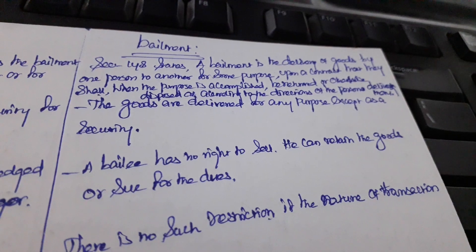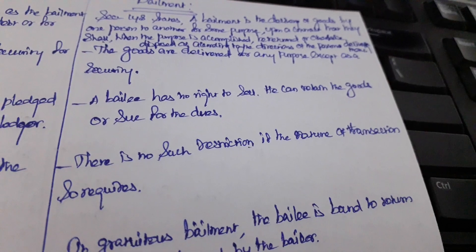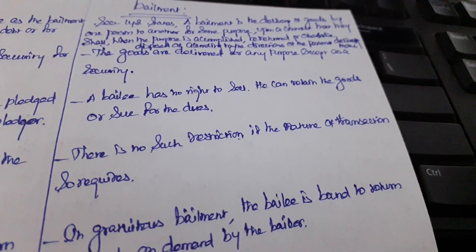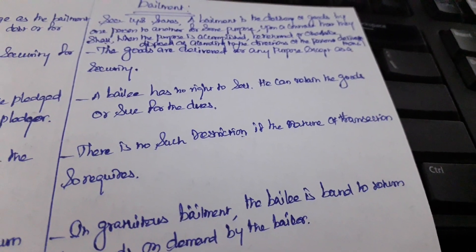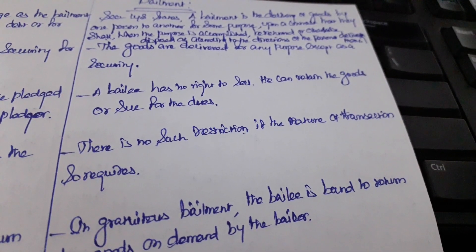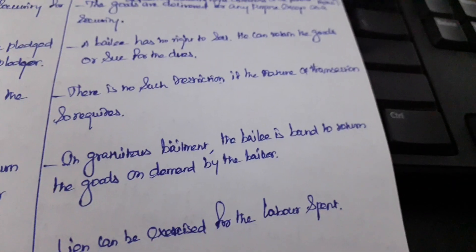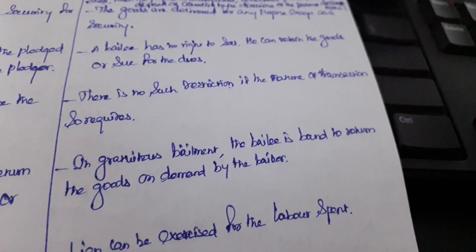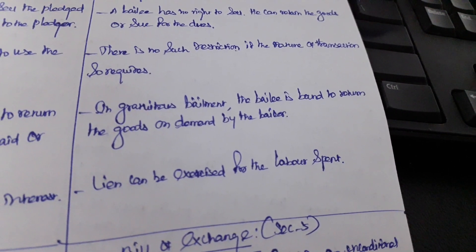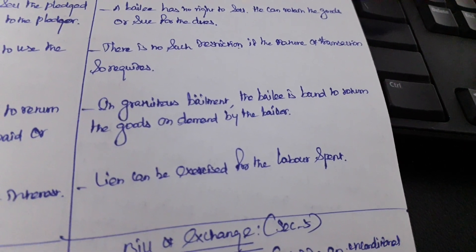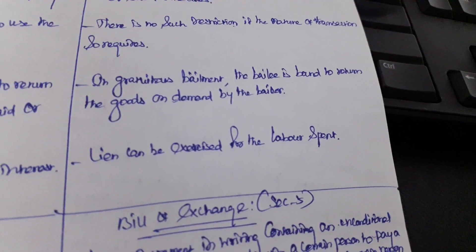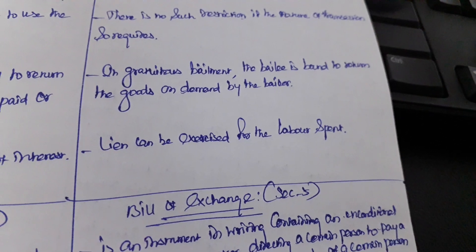In Bailment, the goods are delivered for any purpose except as a security — it does not act as a security. A Bailee has no right to sell; he can retain the goods or sue for the dues. There are no such restrictions if the nature of the transaction so requires. In Bailment, the Bailee is bound to return the goods on demand by the Bailor. A lien can be exercised for the labour that is spent.